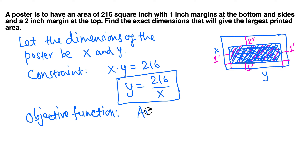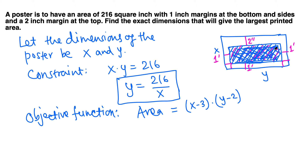Let's write down the area of the printed region. Area is length times width. The total height is x, but we subtract 2 inches at the top and 1 inch at the bottom, giving x minus 3. The total width is y, but we subtract 1 inch on each side, giving y minus 2. So the printed area is (x minus 3) times (y minus 2).